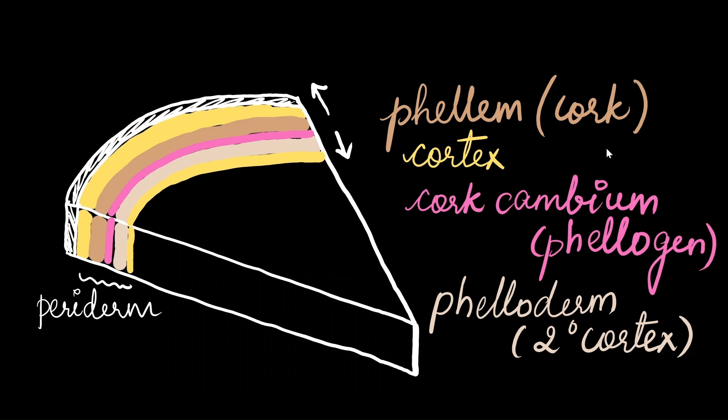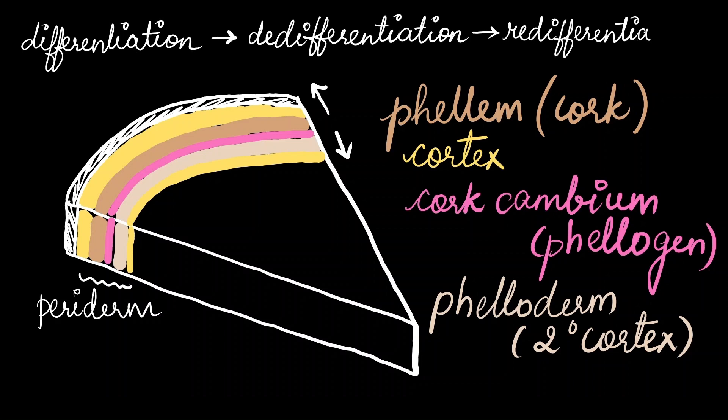So the process goes something like differentiation, de-differentiation, and then finally re-differentiation.